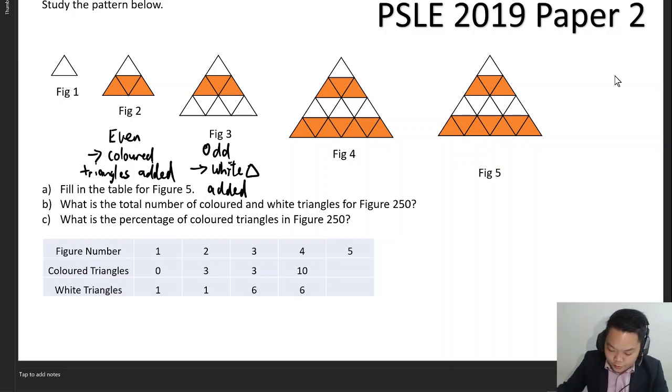When we go on to figure five, we can see that we will be adding on more triangles over here—one, two, three, four, five, six, seven, eight, nine. If you're adding on nine white triangles over here, there'll be six plus nine to give you 15 here. There'll be ten colored triangles still. So that settles part A.